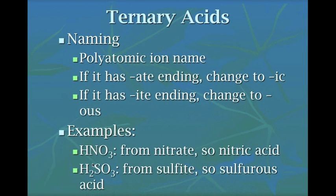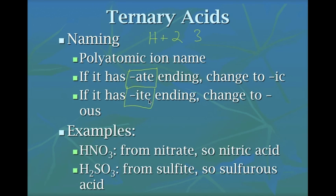The next type is a ternary acid — hydrogen plus a polyatomic, meaning more than one element, so two or three. All polyatomics bonding with hydrogen will have either an '-ate' ending or an '-ite' ending. To name a ternary acid, change '-ate' to '-ic' or change '-ite' to '-ous.'